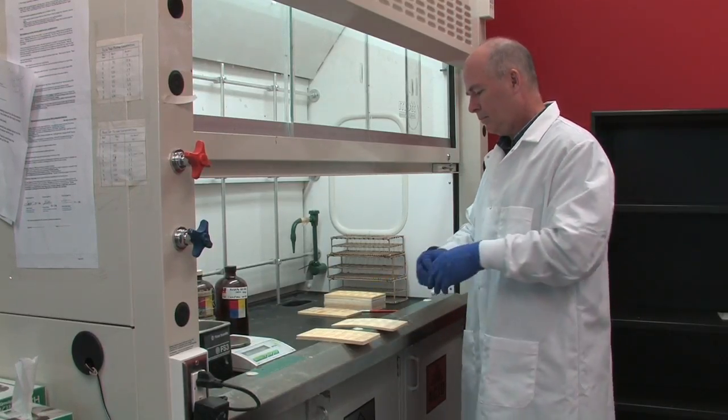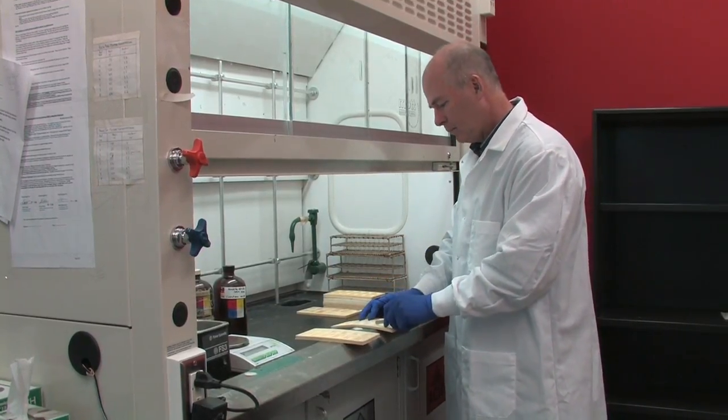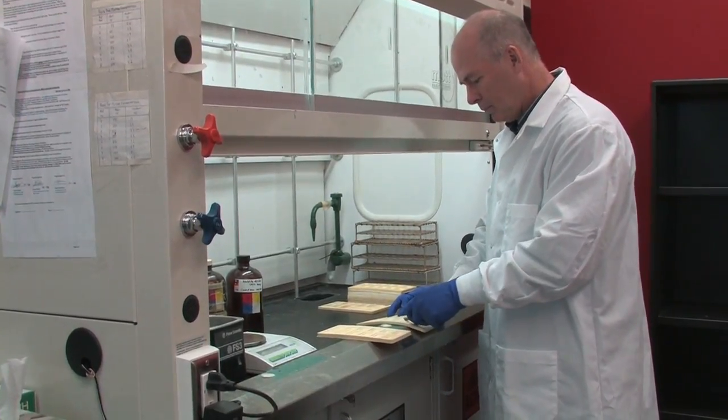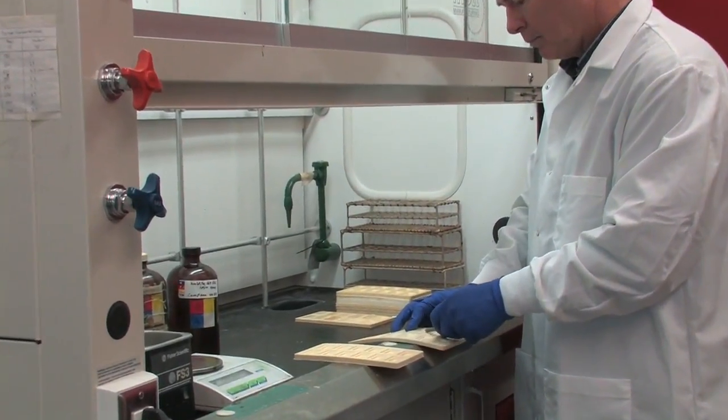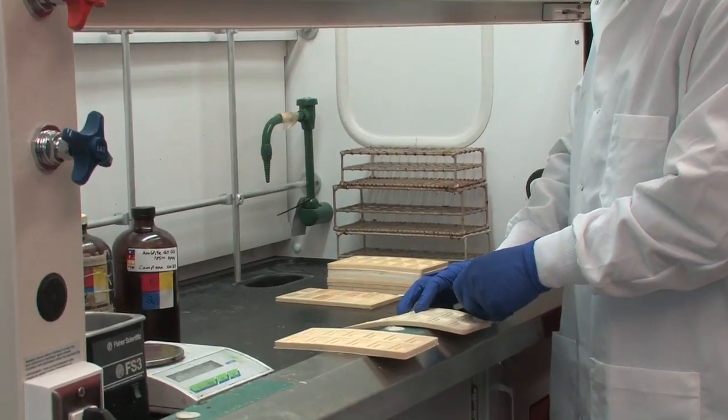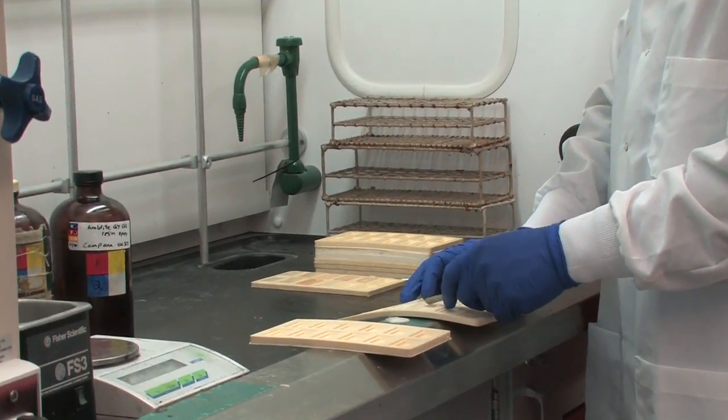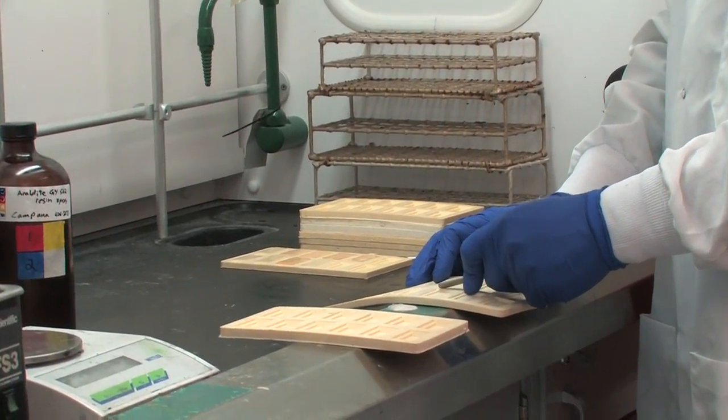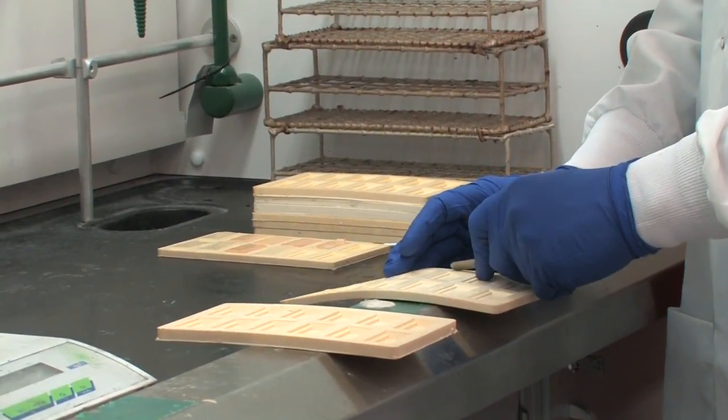The first step is to make sure the molds are clean and free of any old resin from previous pours. For this you can just use your fingernail or any small tool to scrape off the old dried resin.